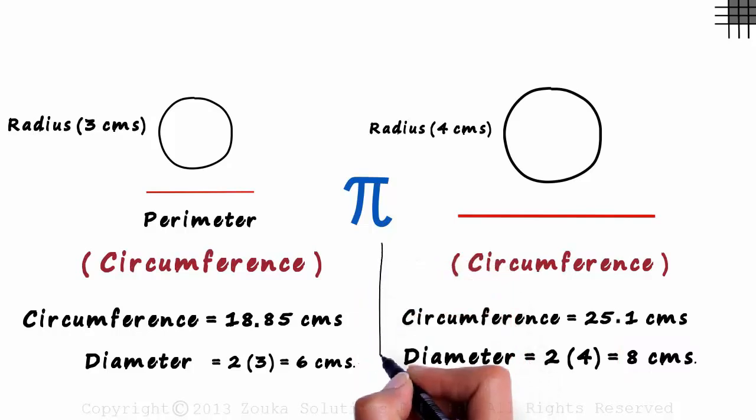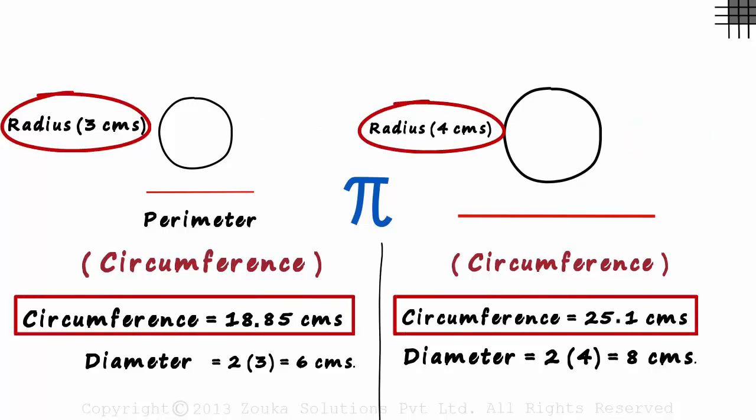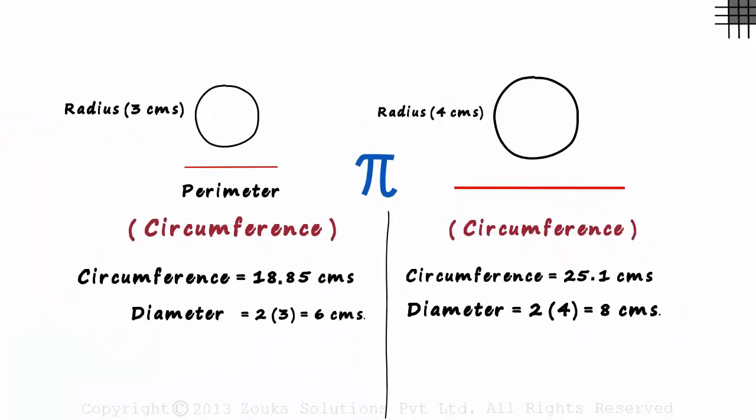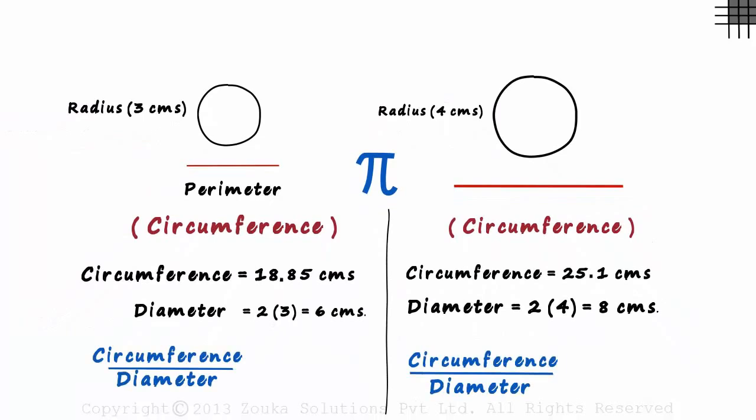We looked at two different cases here. One circle with 3 as the radius and another with 4 as its radius. In both cases, we calculated the circumference and the diameter. Let's zoom out and find the ratio of circumference by diameter in each case. If we calculate the value of circumference by diameter in the first case, we will approximately get it as 3.14. And guess what? In the second case too, we get the value of circumference by diameter as approximately 3.14.